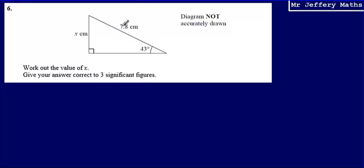I'm going to start by labeling the sides of my right angle triangle. This side 7.8 is the longest side, the hypotenuse. Then the length which is opposite the angle, opposite to 43, is the opposite side. The remaining side which touches the angle but is not the longest side is the adjacent side.